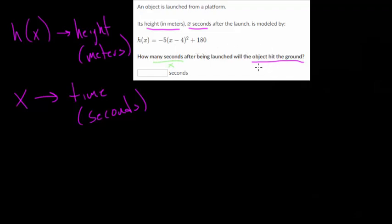That's what we're trying to find. After being launched, will the object hit the ground. So when the object hits the ground, that's the case where the height is equal to zero, or h(x) is zero. So we can set our equation equal to zero, and then solve for x. So h(x), set that equal to zero, because that's when the height of the object is on the ground.